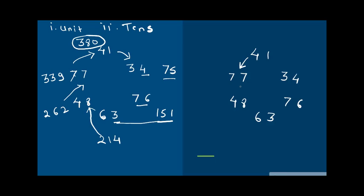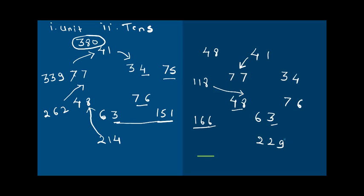Now repeating the same set anti-clockwise to verify: 41 plus 7 = 48, plus 70 = 118, plus 8 = 126, plus 40 = 166, plus 3 = 169, plus 60 = 229, plus 6 = 235, plus 70 = 305, plus 4 = 309, plus 40 = 339, plus 41 = 380. Both clockwise and anti-clockwise confirm 380.